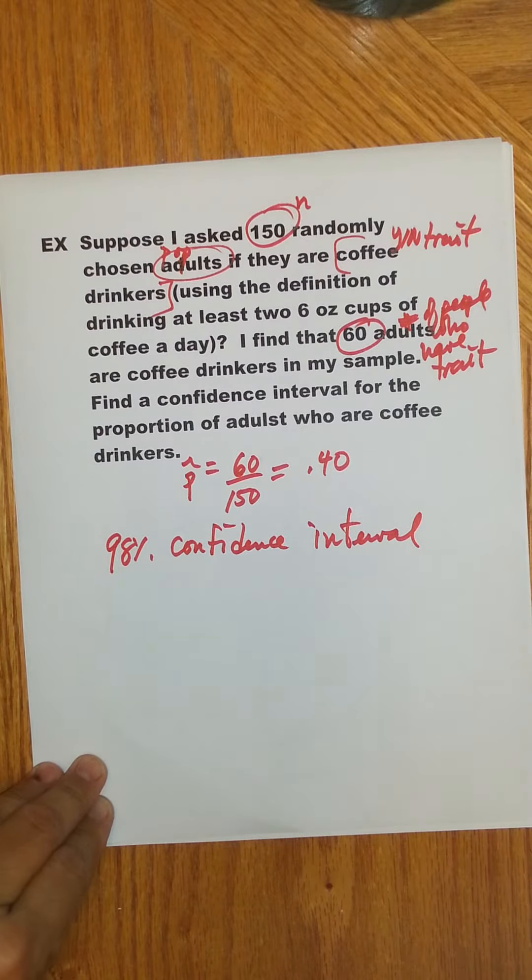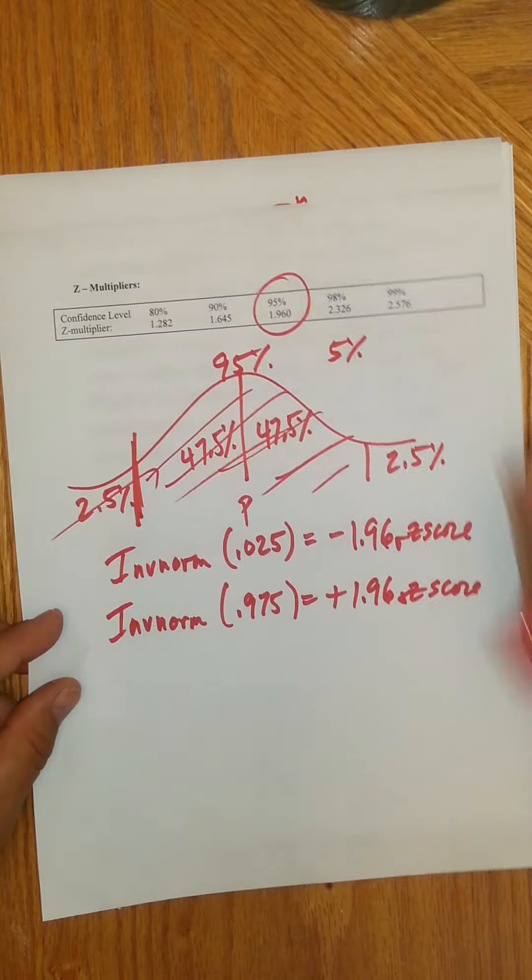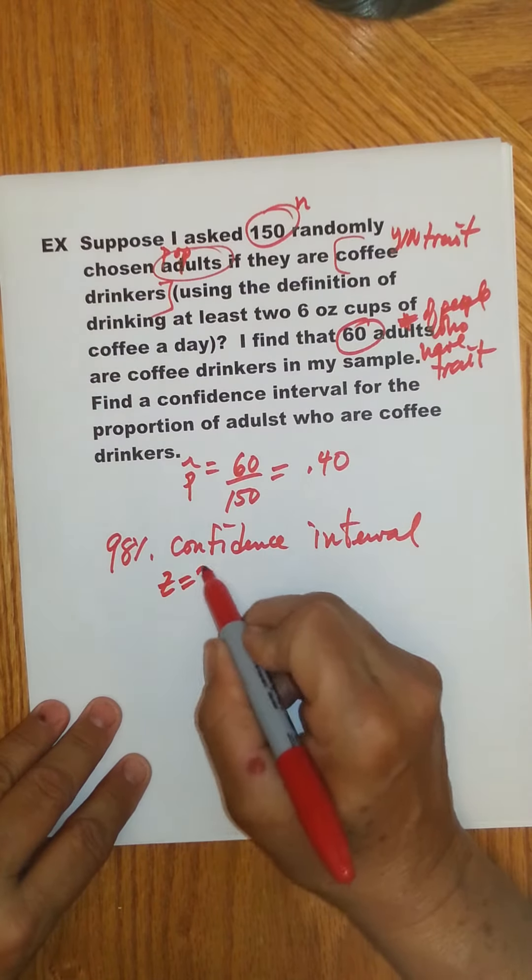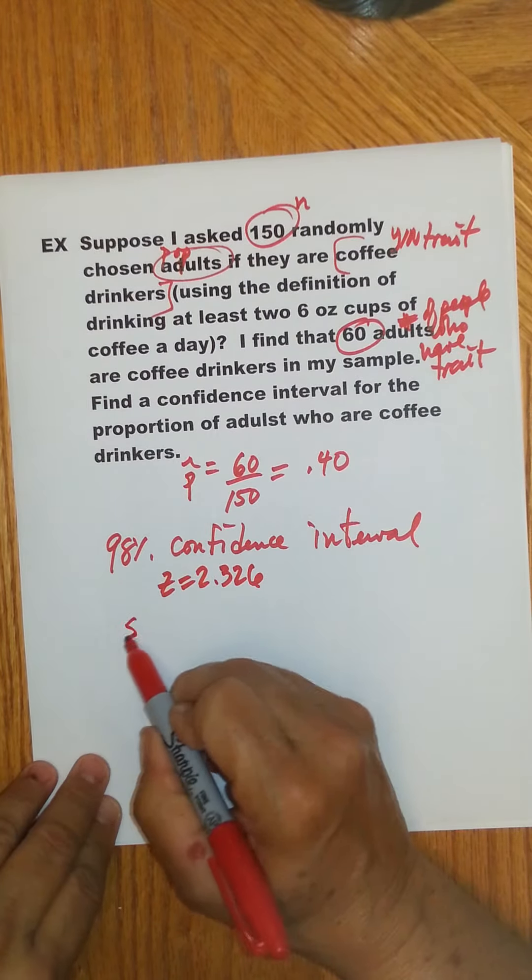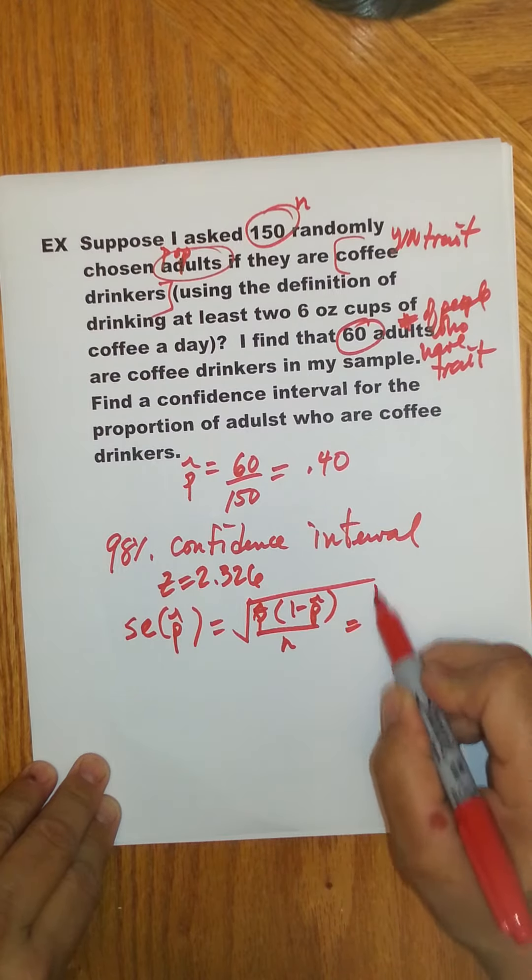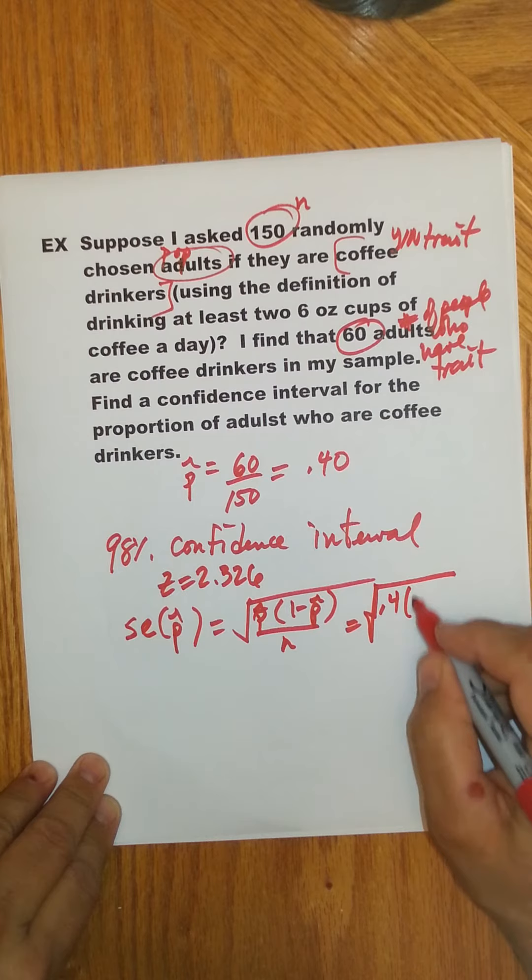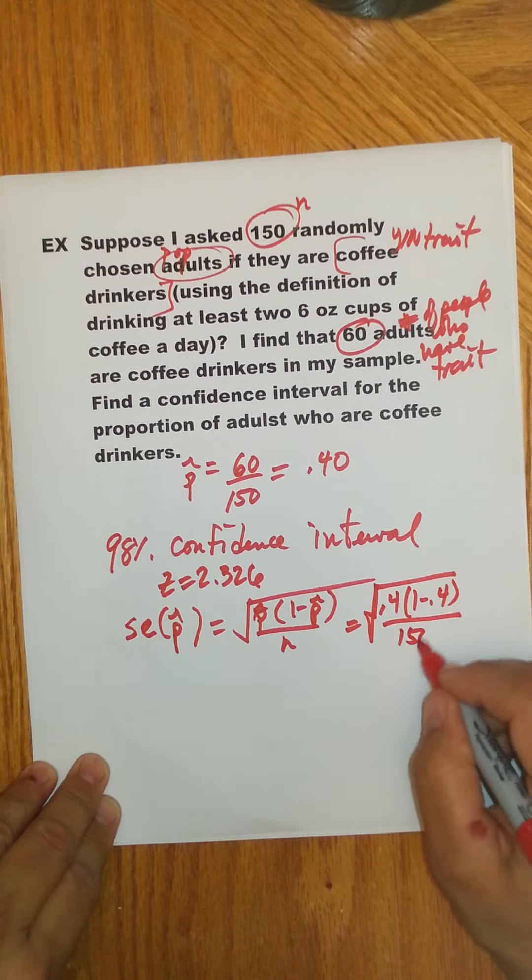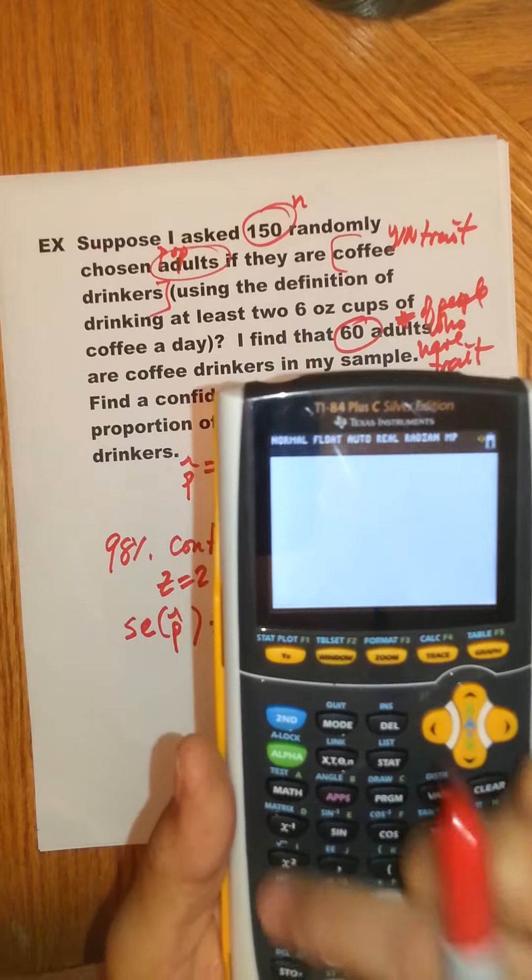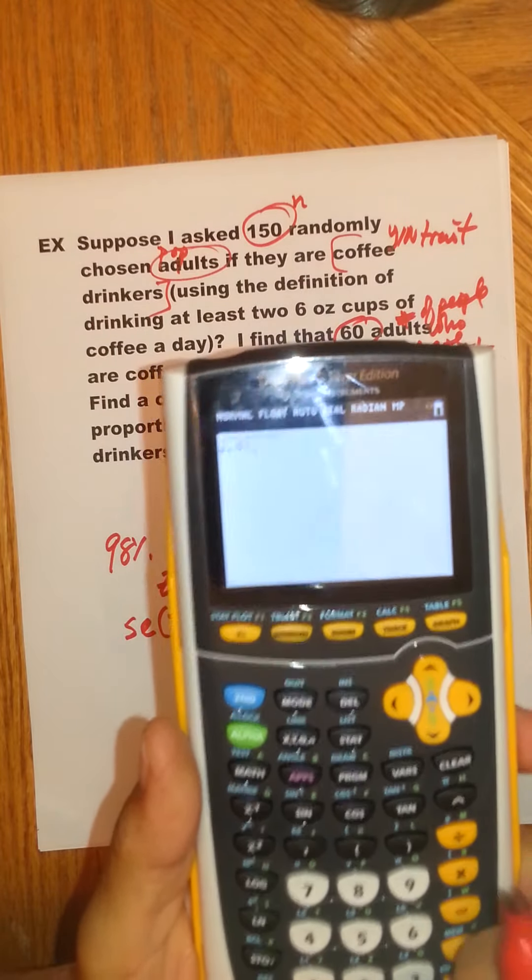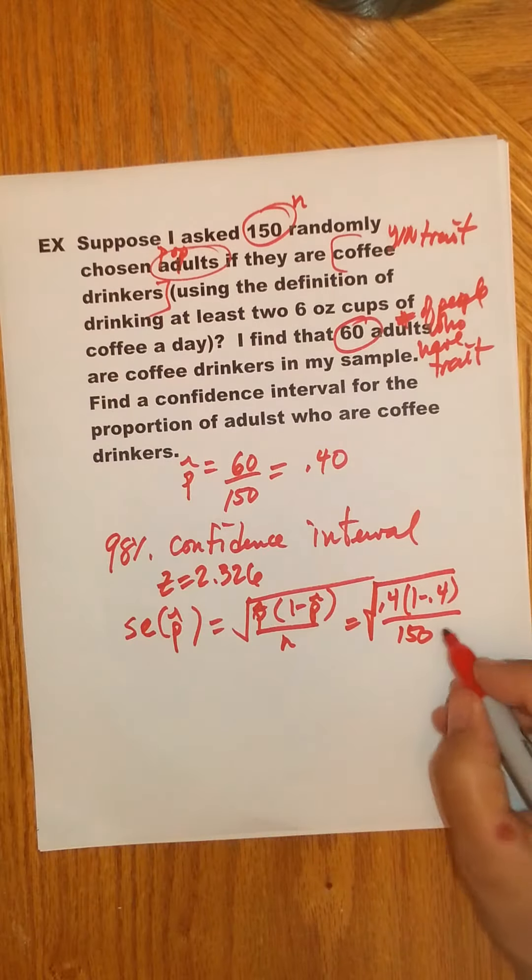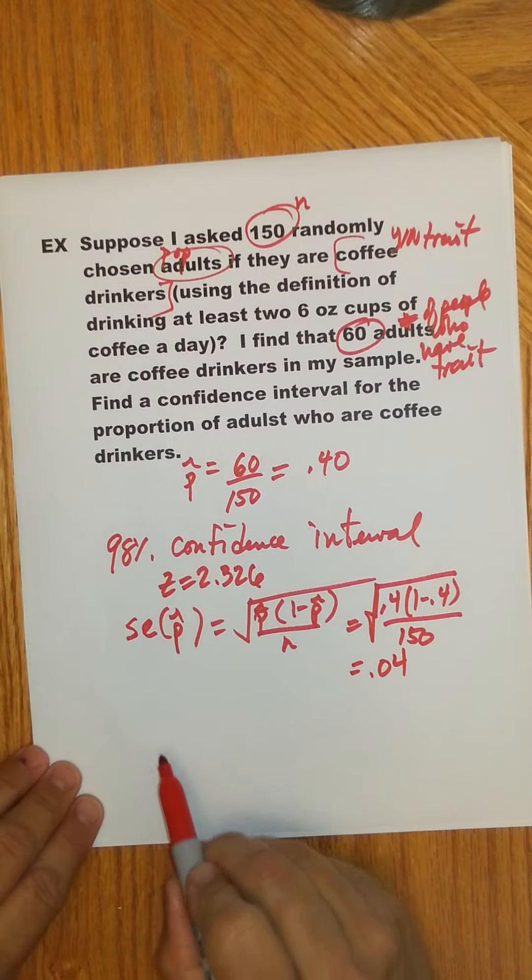And so now, let's go ahead and suppose we're going to do a 98% confidence interval. And usually in the problem they will tell you what confidence level you want. So I look up my z multiplier, 98%. It's 2.326 z multiplier. So I'm going to have z equals 2.326. And now let's figure out our standard error, which is square root of p-hat times 1 minus p-hat over n. In our case that's square root of 0.4, 1 minus 0.4, over 150. And that turns out to be, now let me just show you, you want to put this in just like you would in general. Square root 0.4, 1 minus 0.4, divided by 150. And we get 0.04. So this is 0.04.